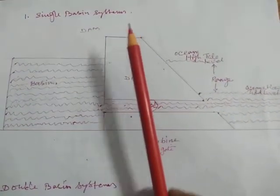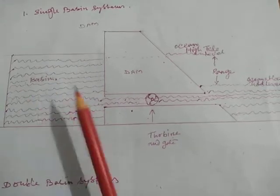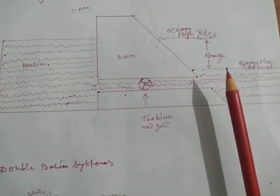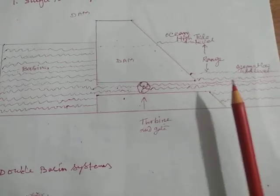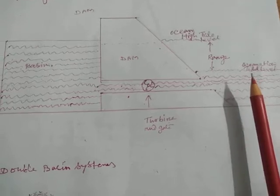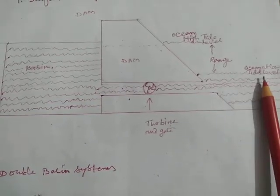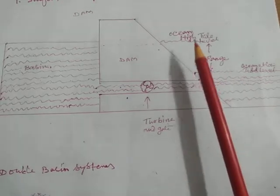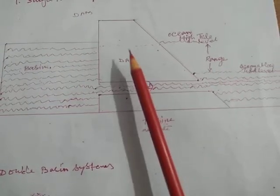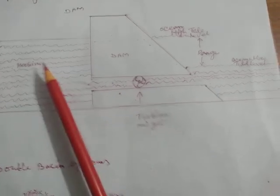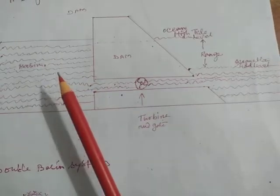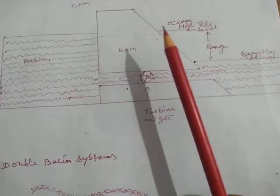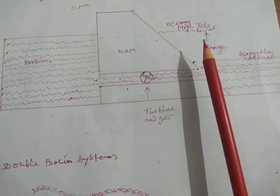The single basin system: the dam, the basin. Here, the seaside, the ocean high tide level, and at low tidal level. The high tide level and low tide level is the range. The dam is the system of the basin with input and output of water.